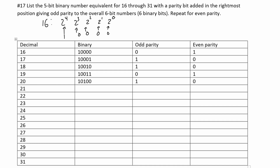21 is just 20 plus 1, so 1 0 1 0 0 is 20 — if we add 1, it's just going to be a 1 at the end, giving 1 0 1 0 1. We have an odd number of ones, so we're going to have a 0 for our odd parity and a 1 for our even parity.